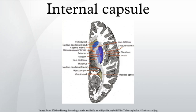The posterior limb of the internal capsule is the portion posterior to the genu. The anterior two-thirds of the occipital part contains fibers of the corticospinal tract, which arise in the motor area of the cerebral cortex and, passing downward through the middle three-fifths of the base of the cerebral peduncle, are continued into the pyramids of the medulla oblongata. The posterior third of the occipital part contains sensory fibers, largely derived from the thalamus, though some may be continued upward from the medial lemniscus.